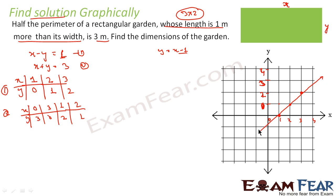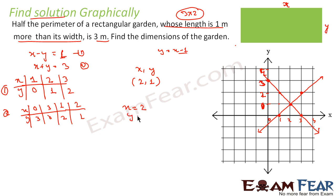Now let us draw the line for x + y = 3. Plotting points: (0, 3), (3, 0), (2, 1), (1, 2). Drawing the line, we can see both lines meet at the point (2, 1). So x = 2 and y = 1 is the solution. Since x is length and y is width, the length is 2 meters and width is 1 meter. That is the dimension of the garden.